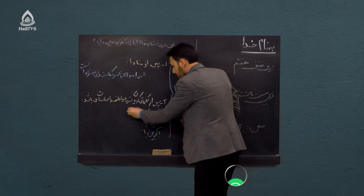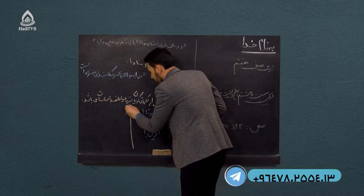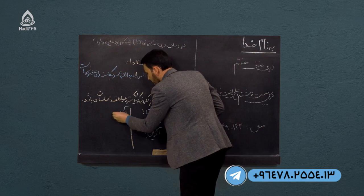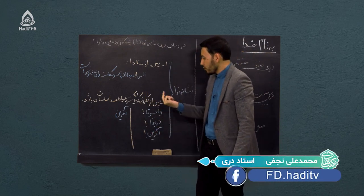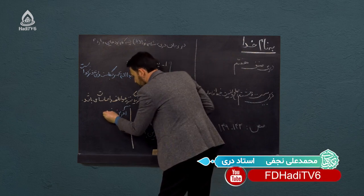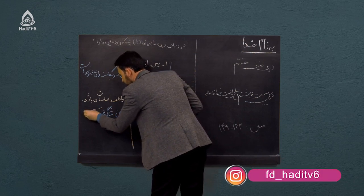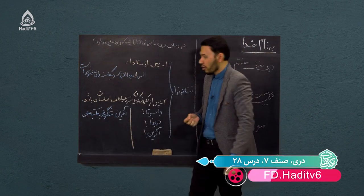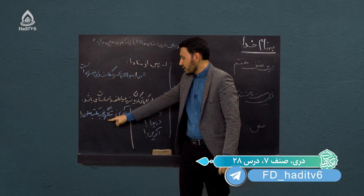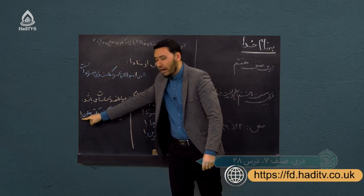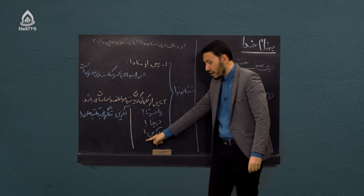مثال: کلمه «آفرین» که یک حس تحسین برای نفر مقابل است. اگر به تنهایی ذکر شود، نشانه ندا همانجا می‌آید. اگر بعدش یک جمله ذکر شود، مثلاً «آفرین شاگرد خوب مکتب حادی»، علامت ندا آخر جمله ذکر می‌شود. اگر کلمه آفرین به تنهایی به کار برود، نشانه ندا بعد از آن می‌آید.